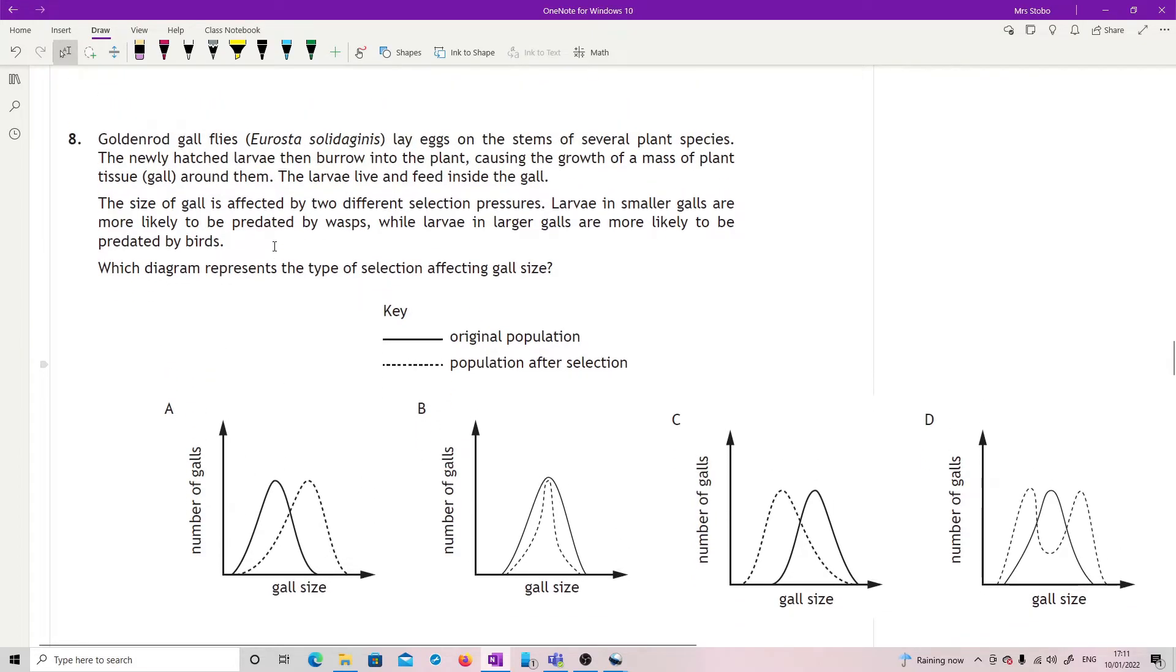Question eight: goldenrod gall flies lay eggs on the stems of several plant species. The newly hatched larvae then burrow into the plant causing the growth of a mass of plant gall around them. The larvae live and feed inside the gall. The size of gall is affected by two different selection pressures: larvae in smaller galls are more likely to be predated by wasps, larvae in larger galls are more likely to be predated by birds. Which diagram represents the type of selection affecting gall size? You've basically been given all four possibilities - two directional selections going on here, a stabilizing and a disruptive. So what you've got to think is, if this is the start and this is your gall size, so if this is the range, these guys are going to be eaten because larger galls are more likely to be predated by birds, so we are selecting against the top end.